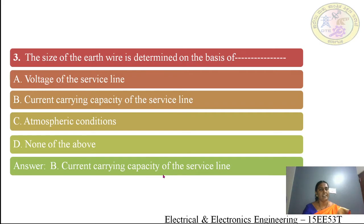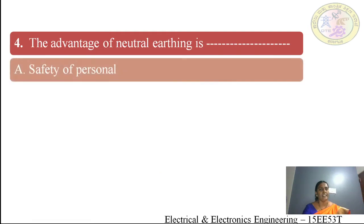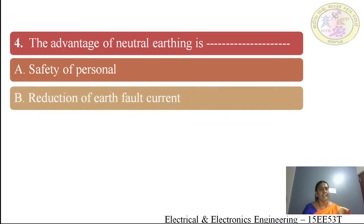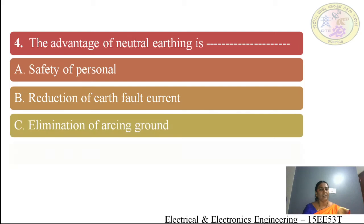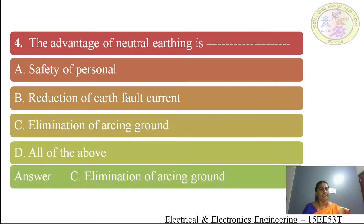The current carrying capacity of the service line is the basis for determining the size of the earth wire. Fourth question: the advantage of neutral earthing is — (A) safety of personnel, (B) reduction of earth fault current, (C) elimination of arcing grounds, (D) all of the above. The answer is option C: elimination of arcing grounds.